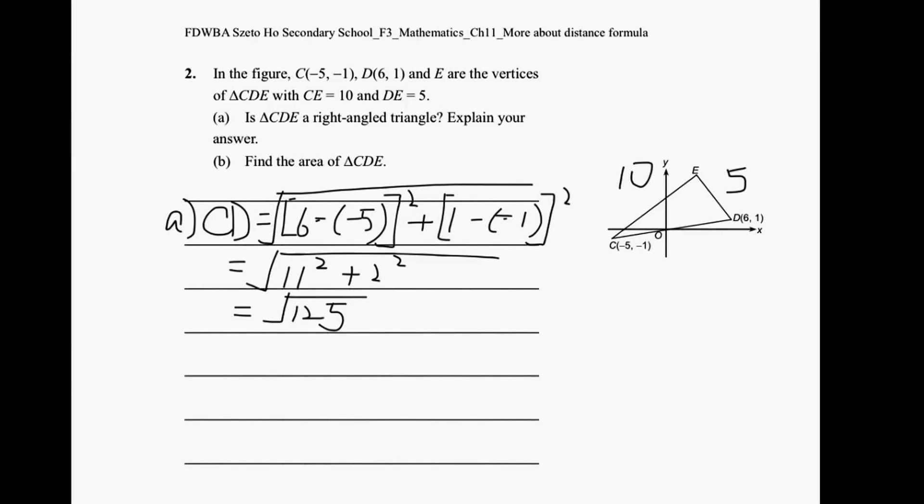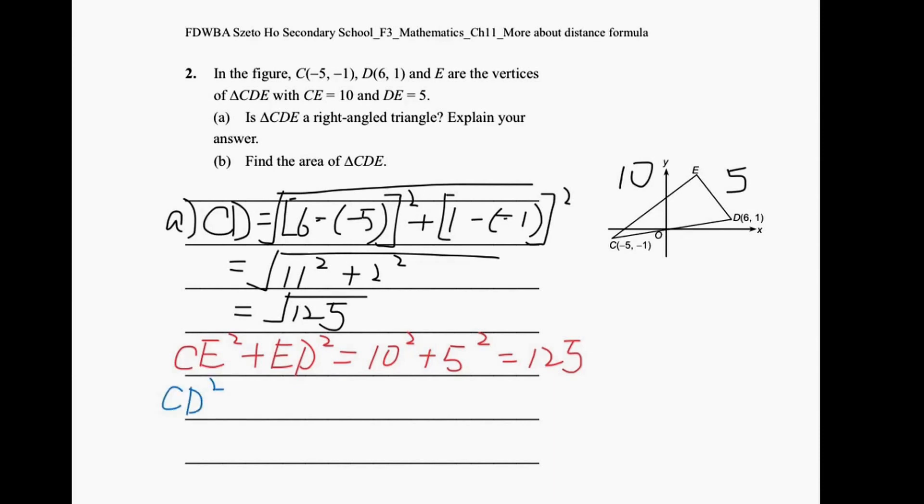In form 2, we have learned about Pythagoras theorem. If we want to prove CDE, triangle CDE is a right-angled triangle, then CE² plus DE² should equal to CD². So first of all, we can calculate CE² plus DE². According to the questions, it is equal to 10² plus 5² and it is equal to 125. And for CD², it is equal to square root of 125 squared, so it is equal to 125.